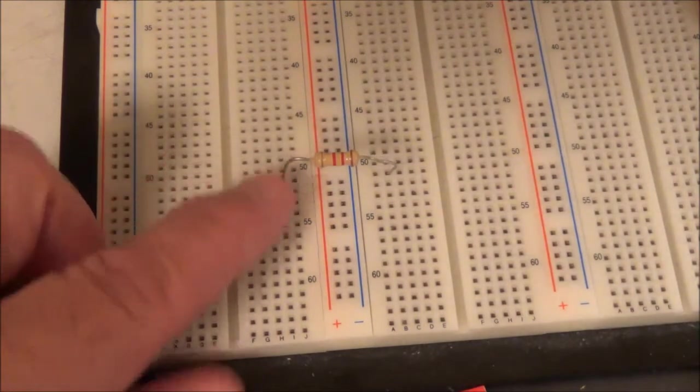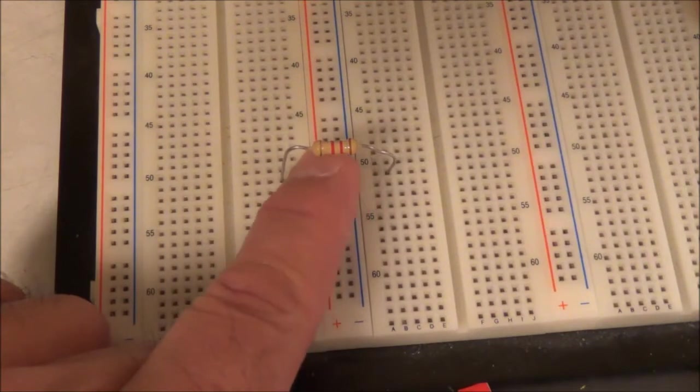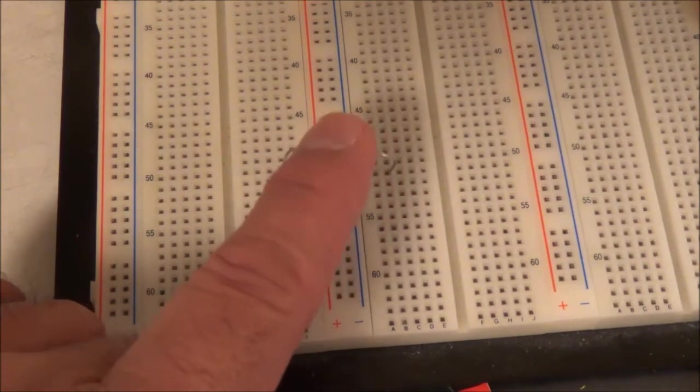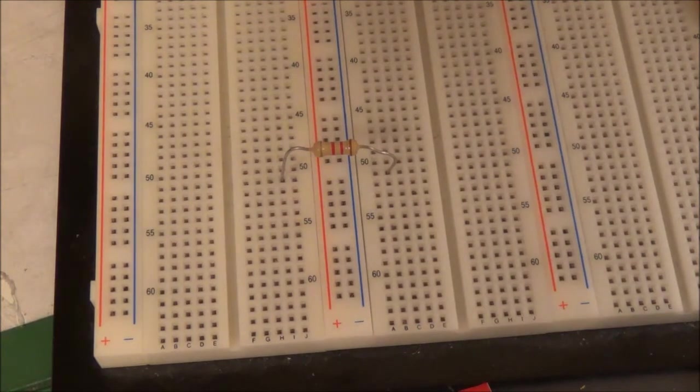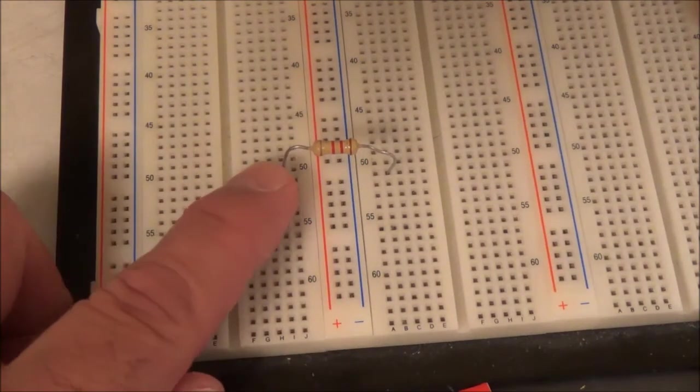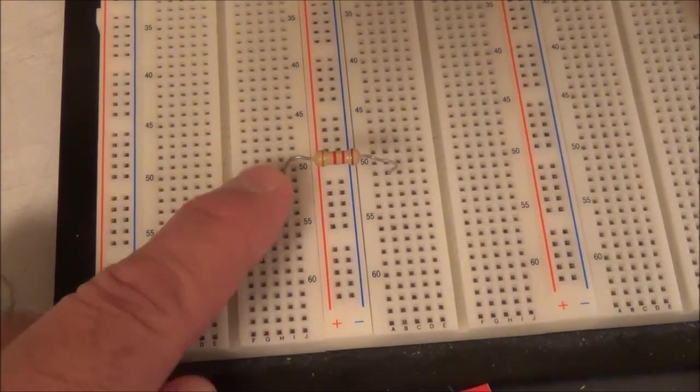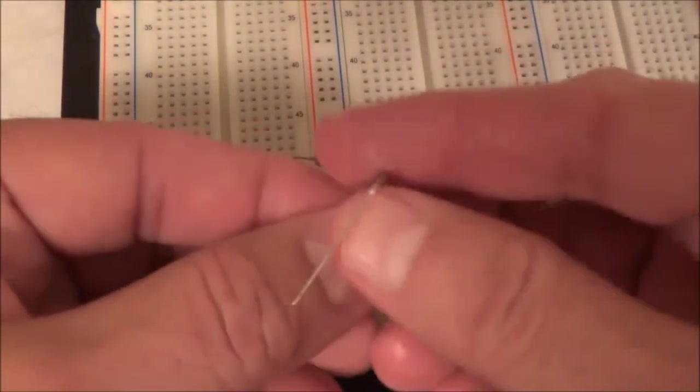This current limiting resistor does exactly what it says—it limits the current so the zener doesn't burn up. I'm going to hook the positive lead of the power supply to this end, and the cathode of the zener is going to be hooked up to the other end of the resistor.